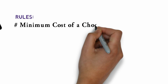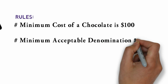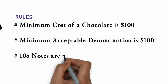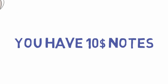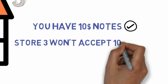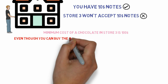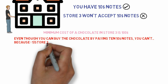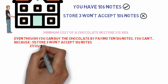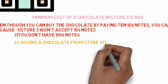The rules of Store 3 are: the minimum cost of a chocolate is $100, the minimum acceptable denomination is $100, and $10 notes are not accepted. You don't have $100 notes — you only have $10 notes. Despite having those $10 notes, you can't buy a chocolate from Store 3 because Store 3 won't accept them. So buying a chocolate from Store 3 is impossible for you.